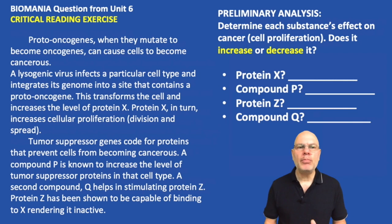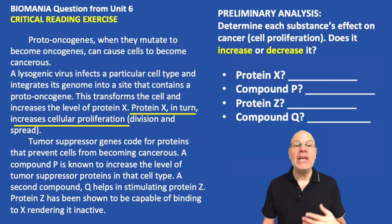Let's start with protein X. Protein X comes about when this cell gets transformed by a lysogenic virus and then it tells you directly that protein X increases cellular proliferation. So protein X's effect is going to increase cellular proliferation, leading to an increased amount of cancer.